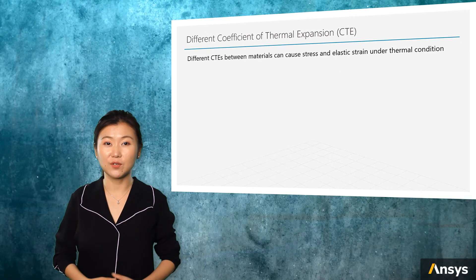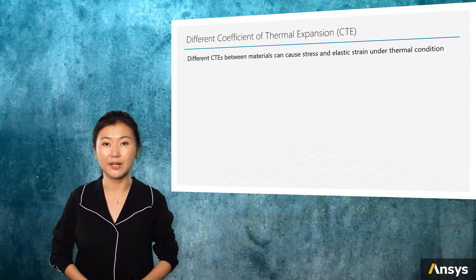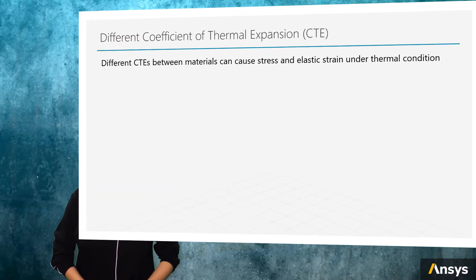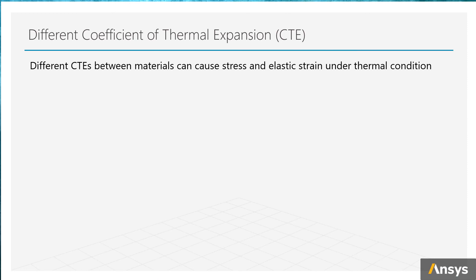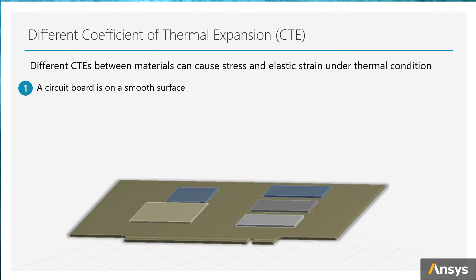There's another situation. Even though there's no constraint, thermal condition can bring elastic strain and stress to the body. If the coefficient of thermal expansion is not uniform over the entire body, there will also be internal force generated. For example, let's have a look at this circuit board. It sits on a smooth surface without any constraint.